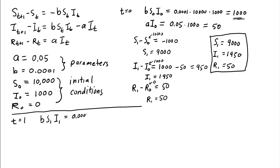0.0001 times, well, what's S1? Now it's not 10,000 anymore, it's just 9,000 susceptibles, but we have more infectives, 1,950. And if you do that calculation, you should get 1,755 new infectives.